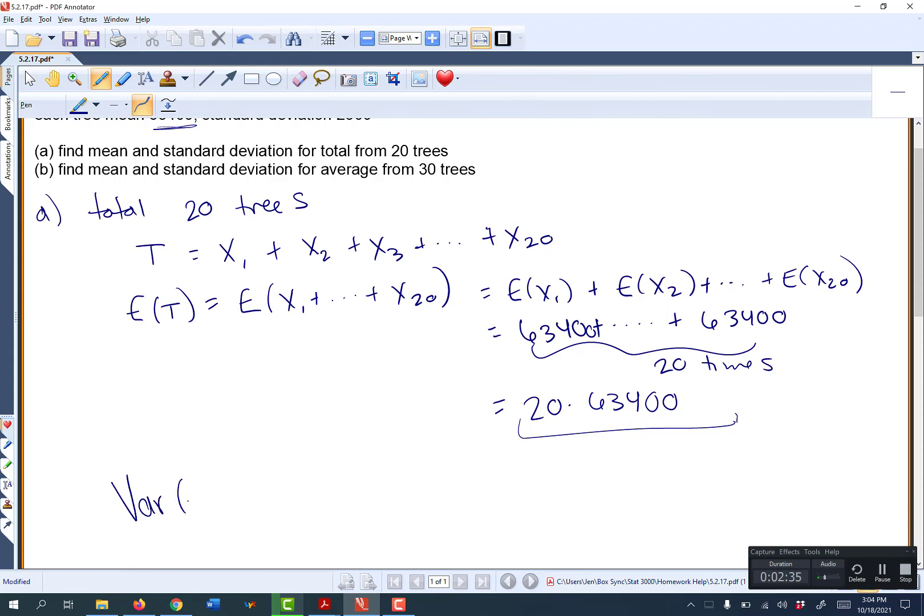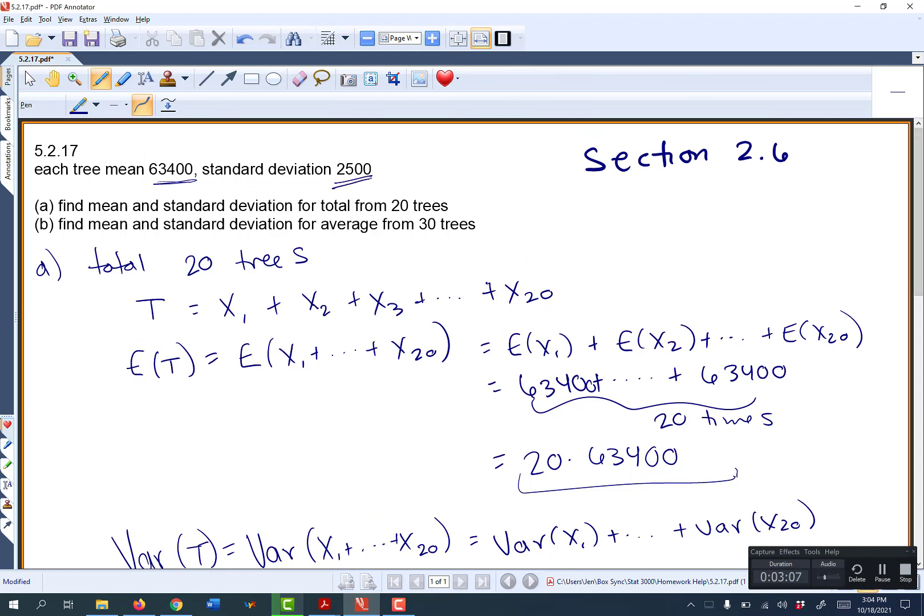Then you're supposed to find the standard deviation. We never find the standard deviation first. You always find the variance first because our rules only work for variance. So we have to find the variance of the total or variance of x1 plus everything up to x20. And the variance rules say just take each individual variance. So it'll be the variance of x1 up to plus the variance of x20. So we just add them all up and each variance, well I don't actually know what the variances are, but I do know the standard deviations.